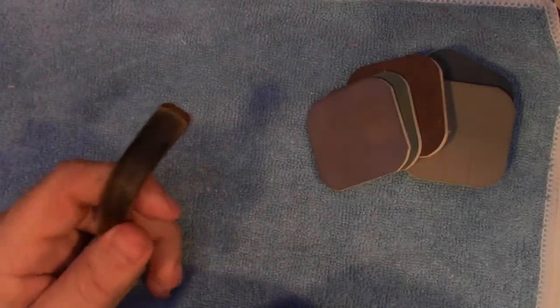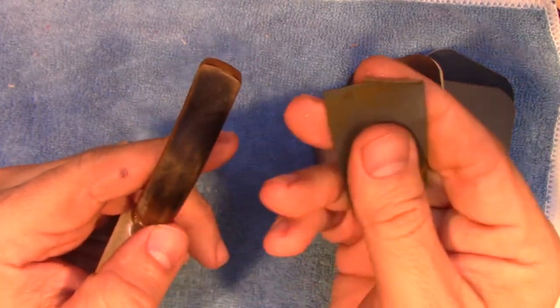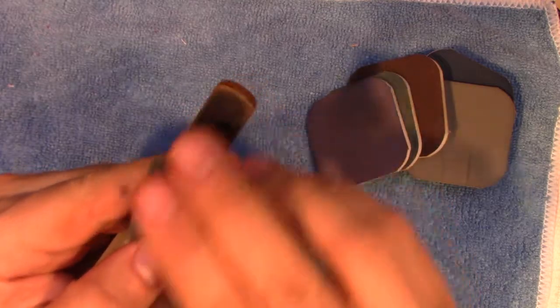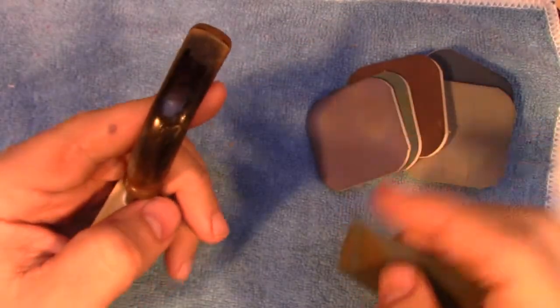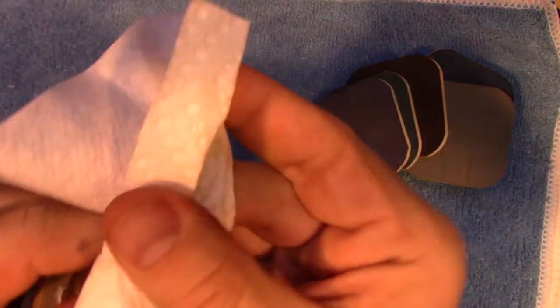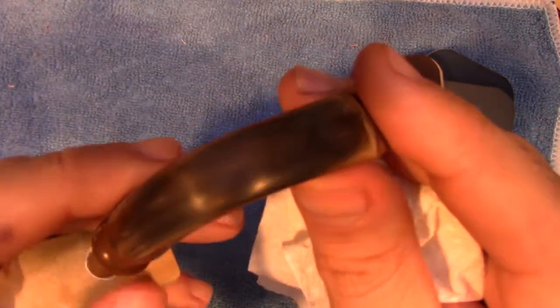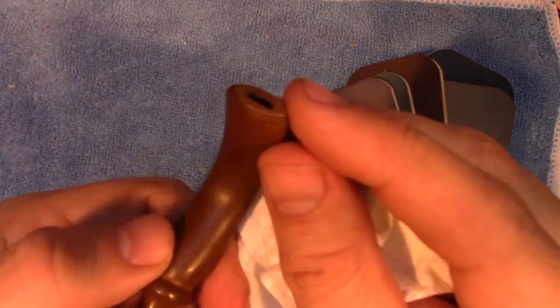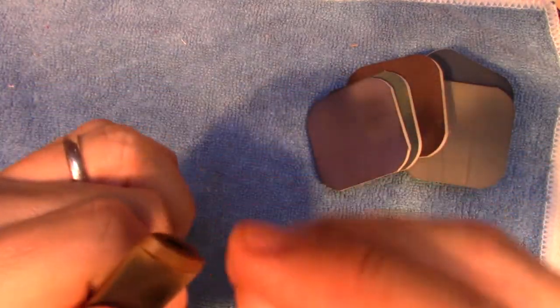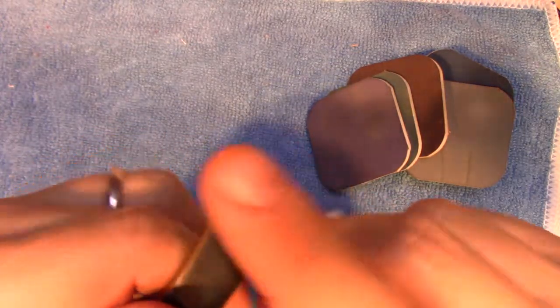Here you can see the beginning of the sanding process. Still using wet and dry sandpaper here. We're just going along very slowly and trying to get that first layer of oxidation off. You can see it is coming off, we are definitely getting to black, but there is a lot of brown that needs to come off. So this is going to take quite some time.